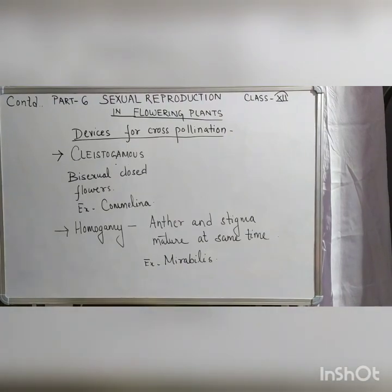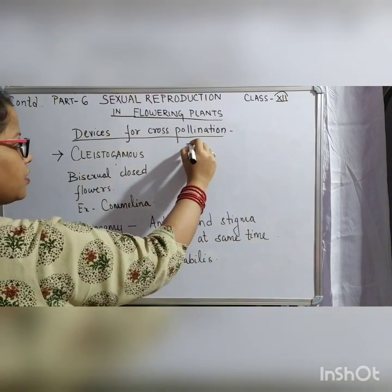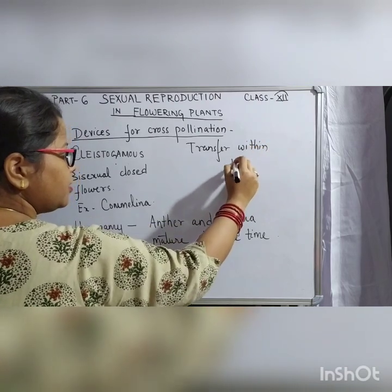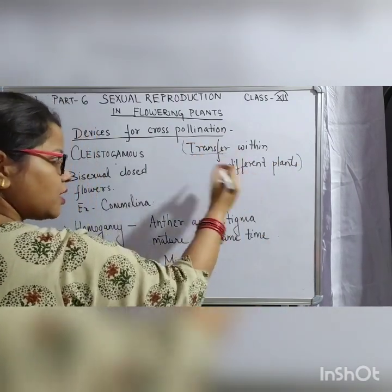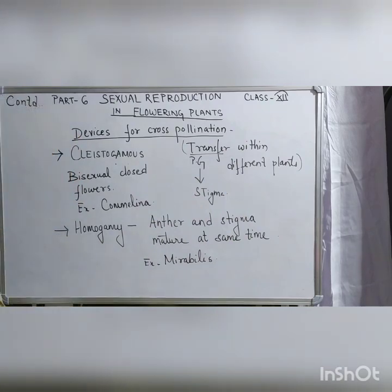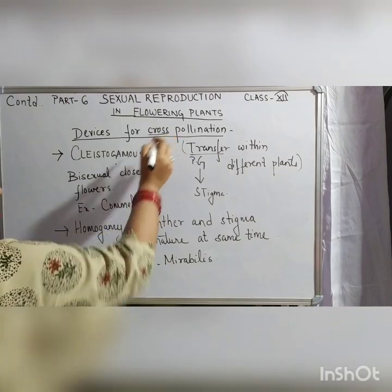Next is the topic of cross pollination. Cross pollination is the transfer of pollen grains between different plants. In your course there are two terminologies that account for cross pollination: cleistogamy and homogamy.